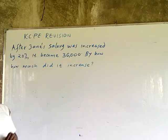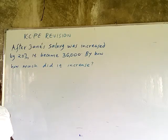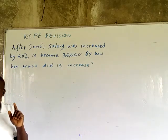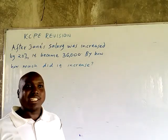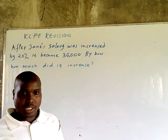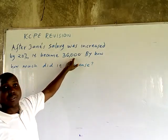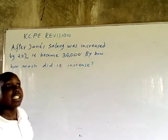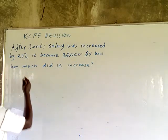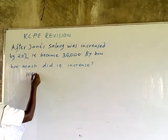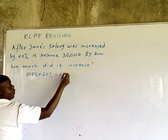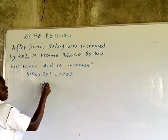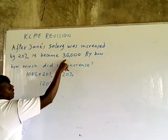Before the increase, the salary was 100%. Because when something is increased, it becomes more than 100%. So after being increased by 20%, the percentage becomes 120%. Therefore, 36,000 represents 120%. So 100% plus 20% equals 120%.